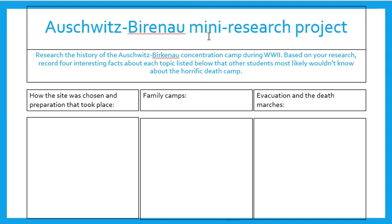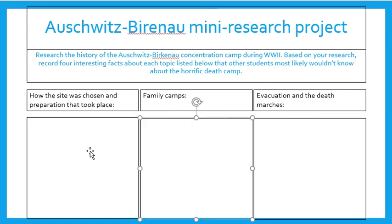This is a mini research project. It's going to be condensed into these three boxes, so don't stress it. You're going to research the history of Auschwitz and Birkenau, the concentration camp during World War II. Based on your research, record four interesting facts about each topic listed below that other students most likely wouldn't know about the horrific death camp. You won't know what your classmates know or don't know, so just put four interesting facts that you found surprising.